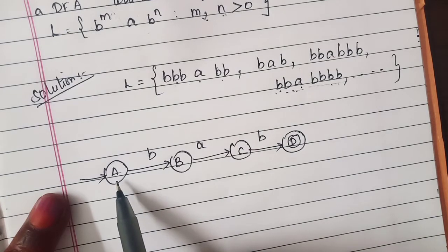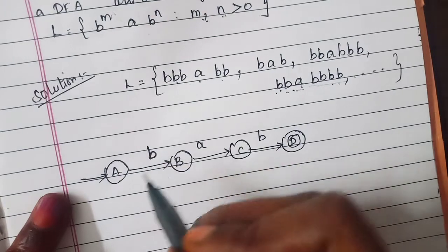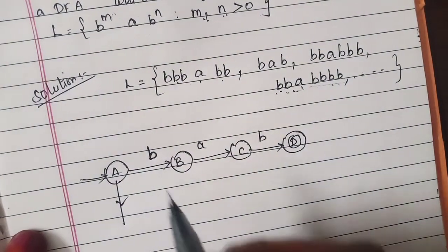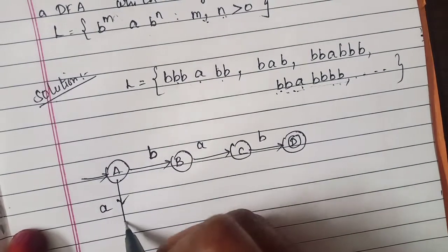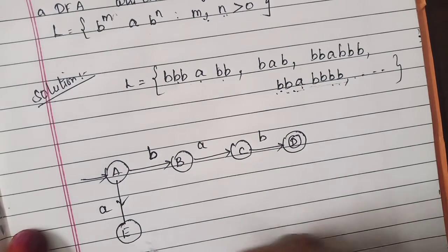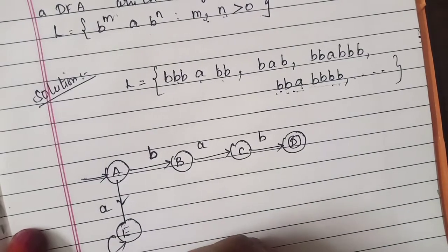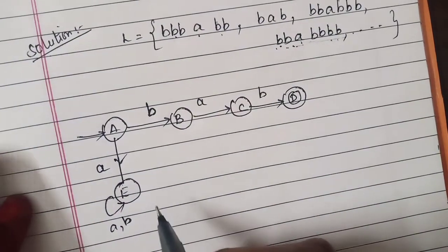Here from state A we should start only using b's not a's. That is why it should not start with a. That is why I put this a in a trapped state which is known as E and whatever the input you are getting it is trapped out over here.